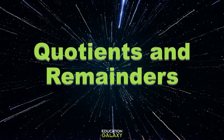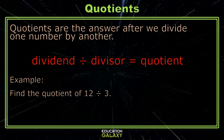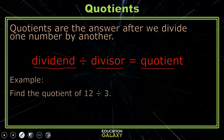Welcome to a lesson on quotients and remainders. Quotients are the answer after we divide one number by another. We have the dividend divided by a divisor, which equals our quotient. For example, find the quotient of 12 divided by 3.